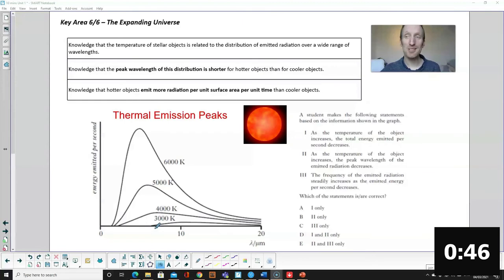Okay, star temperatures. Very common graph showing different temperatures of stars and how the intensity of radiation varies over different wavelengths. Two important things to note: for a hotter star, you're going to have more radiation being emitted per second, but also the peak wavelength, which is the top of the curve, the peak wavelength for a hotter star is going to be shorter. Pause the video, have a go at this multiple choice question.